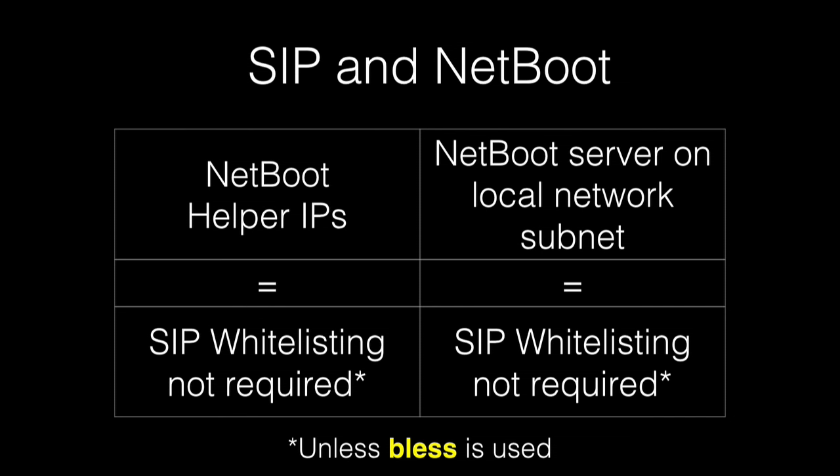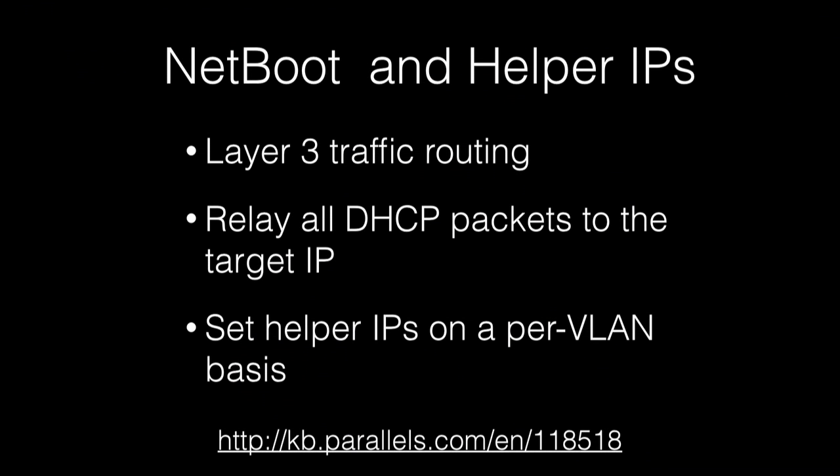The main exception is if you're using the BLESS command in a script to automate NetBooting. In that case, even if your NetBoot set is available in System Preferences, because you're using BLESS in the process, you will still need to whitelist that NetBoot server using csrutil. Helper IPs are settings in your network equipment configuration — most networks are subdivided into VLANs, so you'll need helper IPs set up on the various VLANs where you want NetBoot available. Helper IPs relay all DHCP packets to the specified IP address of your NetBoot server, making sure your NetBoot server can hear the broadcast DHCP requests. Parallels has a good write-up on how this works, available via the link on the screen.